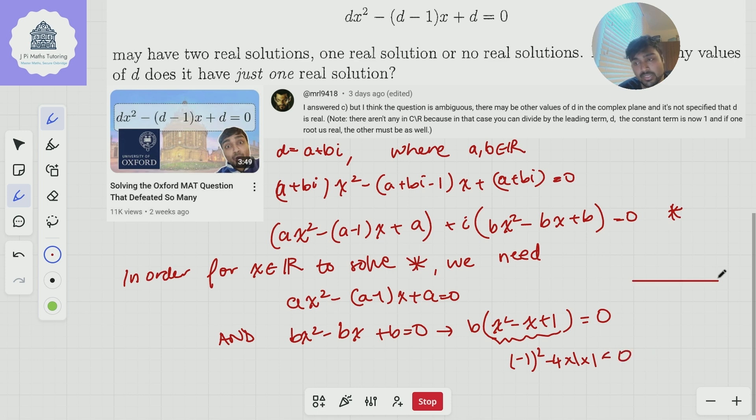So if I was to sketch this graph, y equals x squared minus x plus 1, it turns out it's going to have a minimum when x is a half, and it's going to look something like this. It has no real solutions because the discriminant's negative. And that means for all real values of x, this quadratic takes a positive value. And so the only way that this can equal 0 is if b itself is 0.